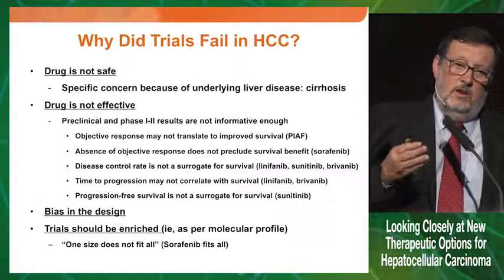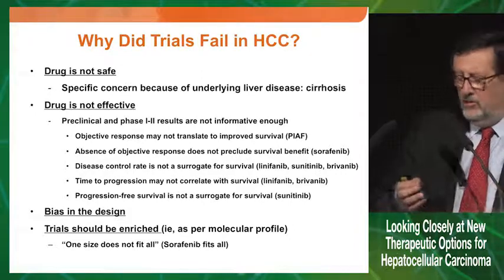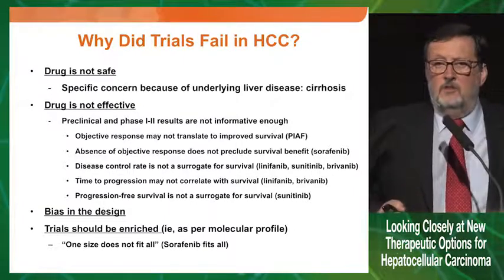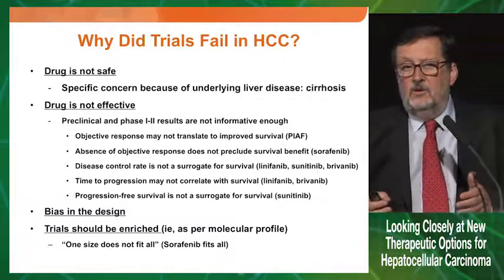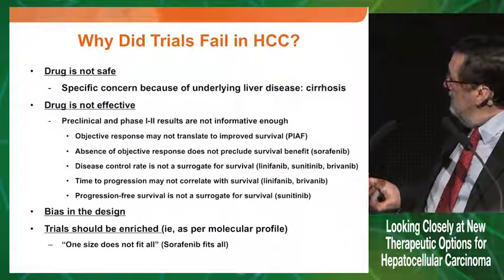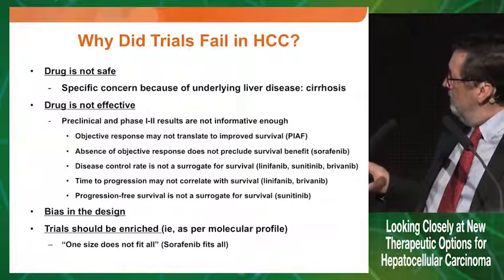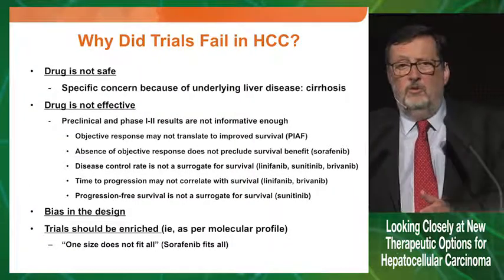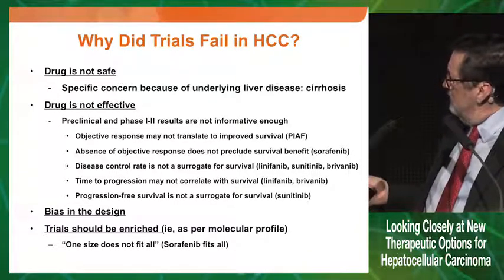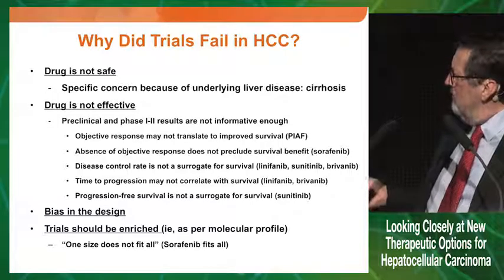When we look at early-phase trials — the sorafenib Phase II or the Regorafenib Phase II — there was a signal, and some tumor progressions were stratified to detect it. Why did the trials fail? One reason is that the drug is not effective or not safe. Some efficacy signals like response may come together with toxicity. Objective response may not translate to improved survival — we have drugs with higher objective response rates that came with no improvement. Conversely, absence of objective response does not mean no benefit, as we know from sorafenib and Regorafenib. Control rate and TTP also may not be adequate surrogates. The definitions and parameters we use are faulty.